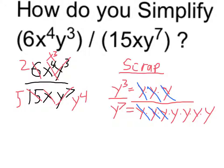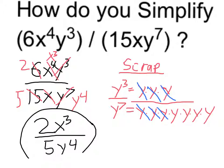So let me just clean this up. My final simplified version is 2x cubed over 5y to the 4th. The number part, I simplified just as I would any fraction, looking for a common factor that went into them.